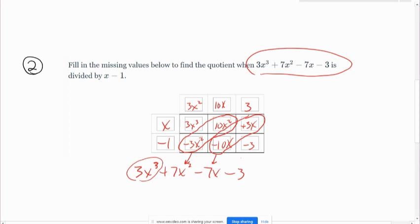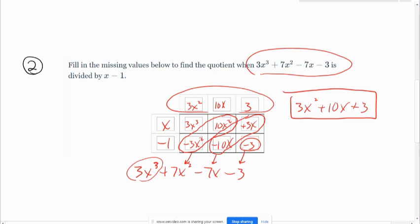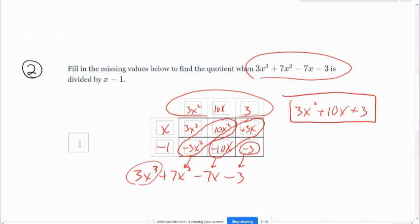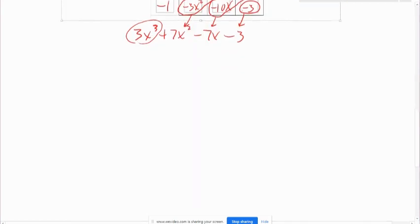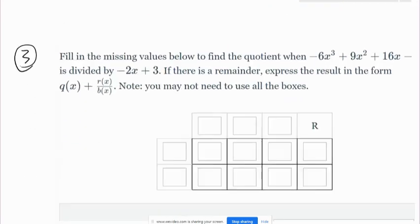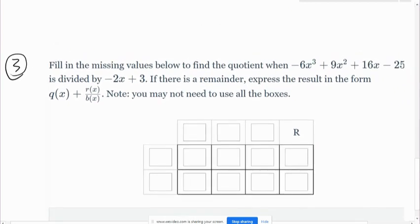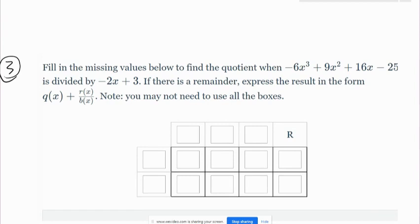And this is going to be negative 3. And again, it went in evenly because the negative 3 matches what we have at the end. So our answer is right up here at the top. It is 3x squared plus 10x plus 3. Okay. Now I'd like you to copy this one down and go ahead and give it a try. Pause your video, try this one on your own, and then when you think you're done, go ahead and press play to check your answer.